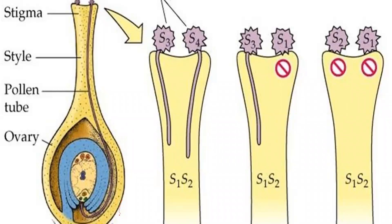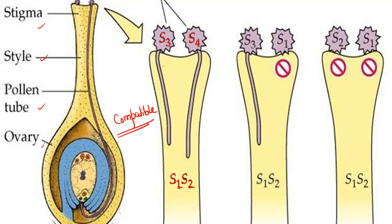Here is an easy diagram. This is the stigma, this is the style, this is the pollen tube, and this is the ovary. When pollen lands on the stigma, if the allelic form of the pollen is S3 and S4, and the allelic form of the stigma is S1 and S2, then there is no incompatibility — that means it is compatible. The pollen tube is growing.